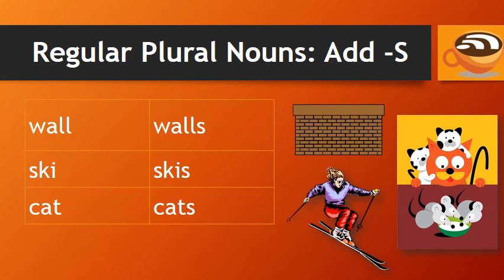To make the plural of regular nouns, we simply add S. For example: wall, walls; ski, skis; cat, cats.